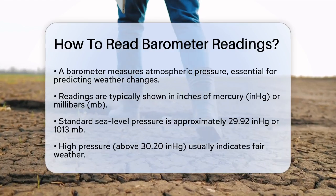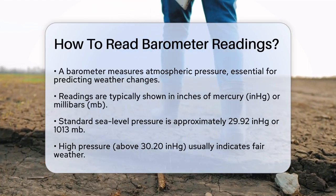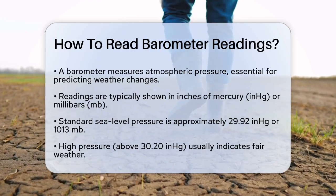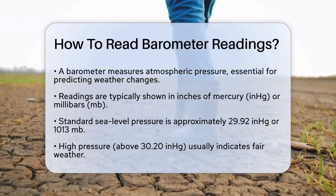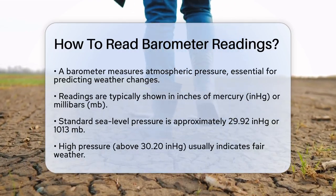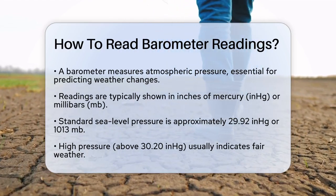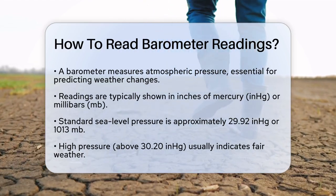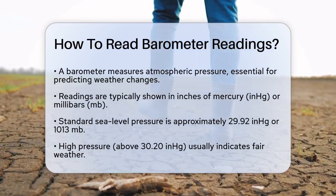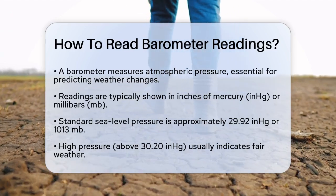First, understand what a barometer does. It measures atmospheric pressure, which is a key indicator of weather changes. You'll usually see readings in inches of mercury (inHg) or millibars (mb). For example, standard pressure at sea level is around 29.92 inHg, or 1013 millibars.